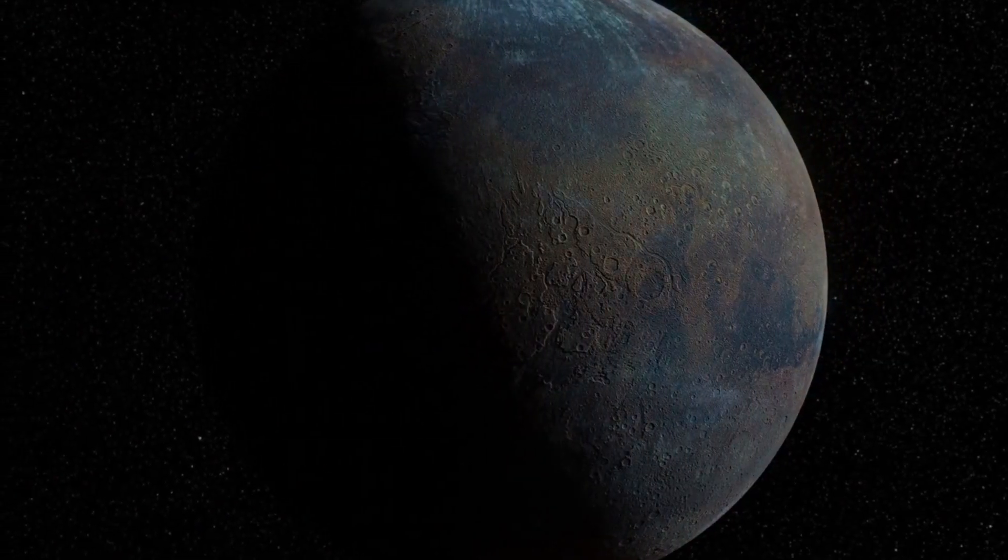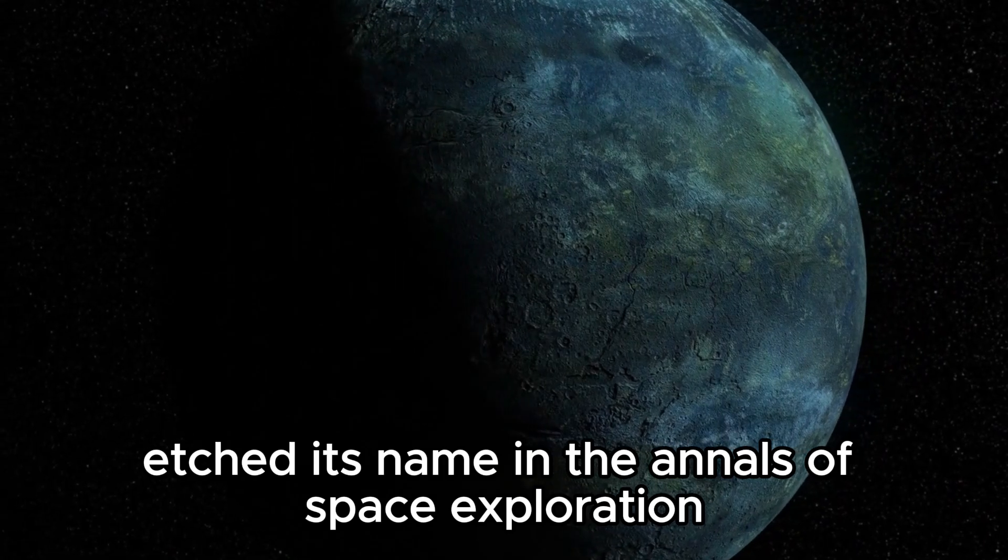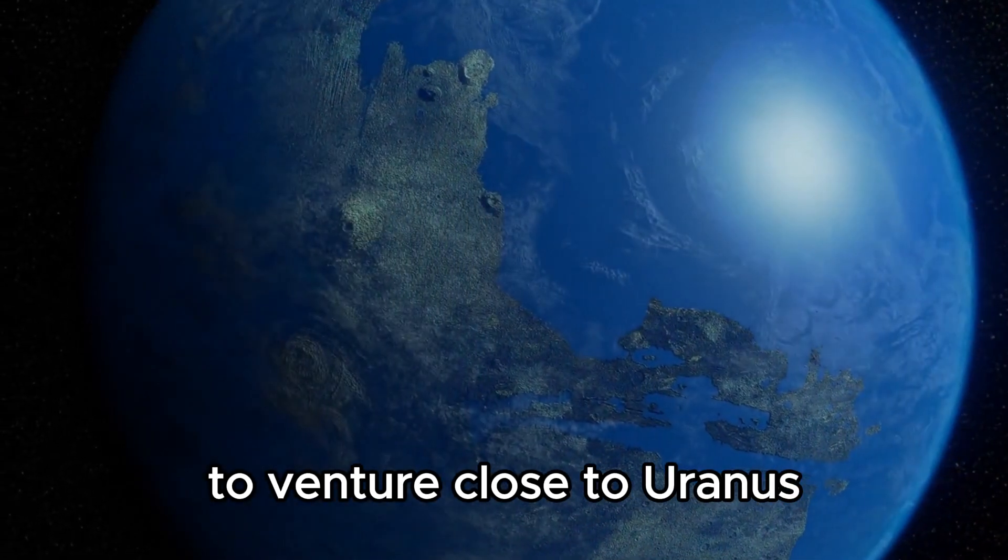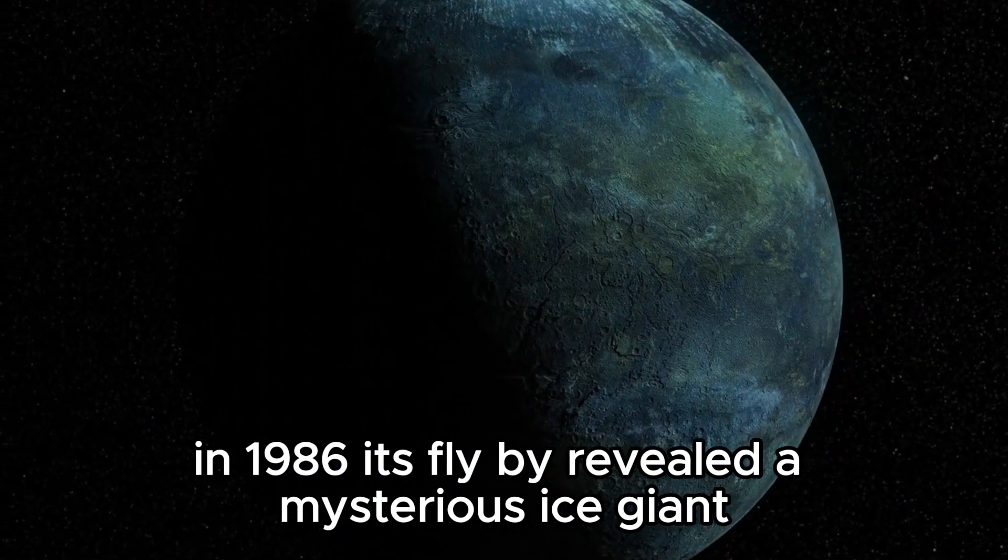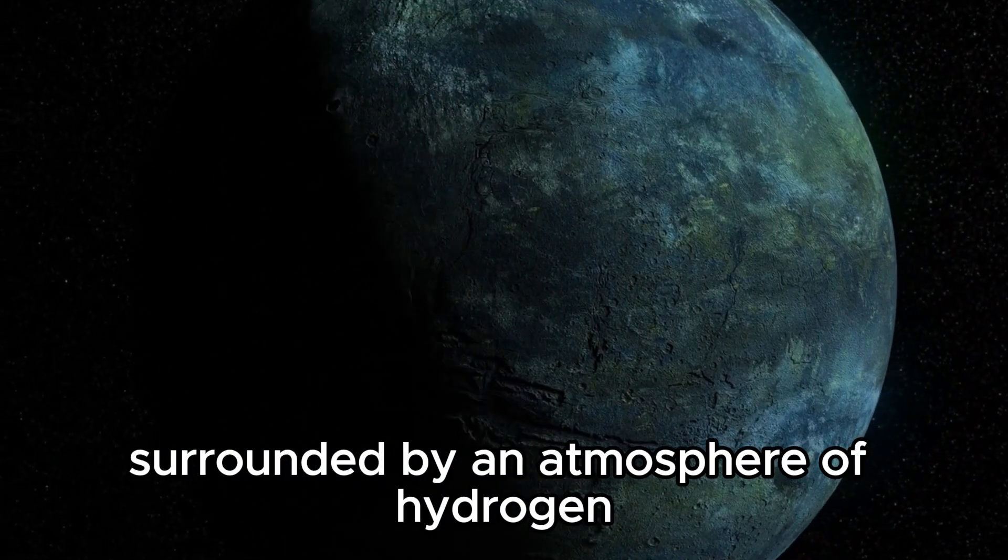Voyager 2, in particular, etched its name in the annals of space exploration by becoming the first spacecraft to venture close to Uranus in 1986. Its flyby revealed a mysterious ice giant surrounded by an atmosphere of hydrogen, helium, and methane.